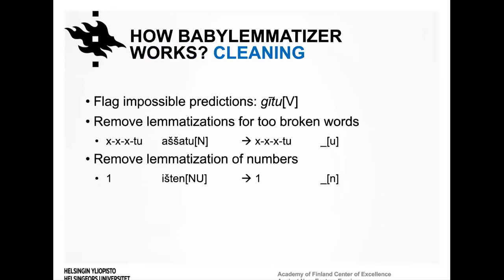The final step uses heuristic rules to identify problems in the lemmatization. We flag impossible predictions such as infinitives that do not follow Akkadian infinitive patterns, and remove lemmatizations for words too broken to be lemmatized — calculated by how many signs in the original word are unreadable (marked with an 'x'). We allow lemmatization only when 80% or more of the signs are readable, and we also remove lemmatizations of numbers, consistent with ORACC practices.